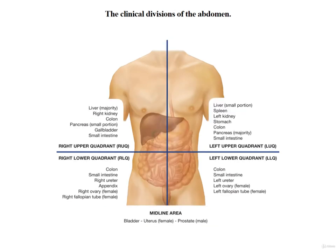The second method for subdividing the abdominopelvic cavity is the clinical division, which divides the abdomen into four quadrants: the right upper quadrant, left upper quadrant, right lower quadrant, and left lower quadrant. Some organs fall along the midline — in both genders the bladder is midline, in females the uterus is midline, and in males the prostate gland is midline. The right and left designations refer to the patient's right and left, not the examiner's.